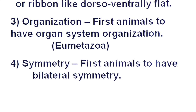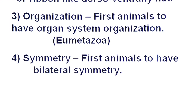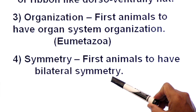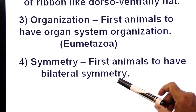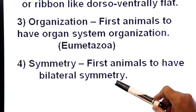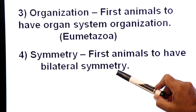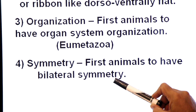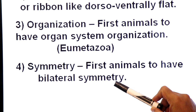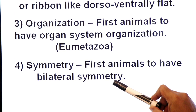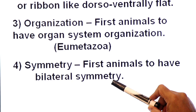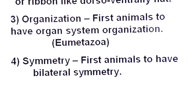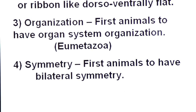Now symmetry. These are the first animals to have bilateral symmetry. Bilateral symmetry means two-sided symmetry — they have one right side and one left side. Their body can be cut into two equal halves by a single imaginary plane.